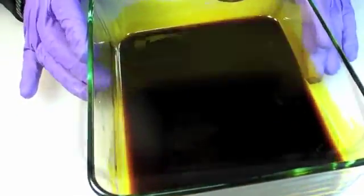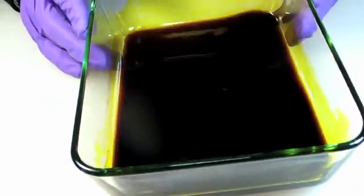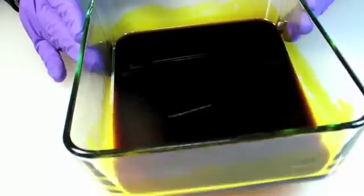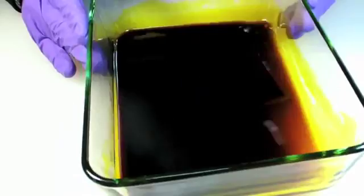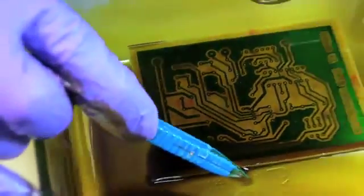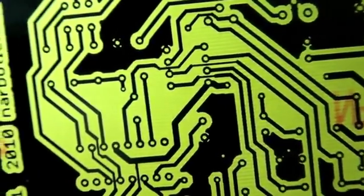The entire etching process takes around 20 minutes. When I first put the board in, I'll agitate for about 30 seconds to a minute. Then I'll leave it alone, come back for a few minutes to check on it and agitate a bit more. This one's almost done but still has some areas in the middle that need a bit more time. Once I'm sure all the exposed copper has been removed, I give the board another quick rinse and another close-up inspection.